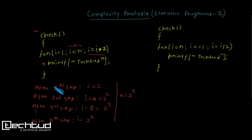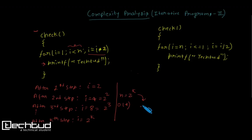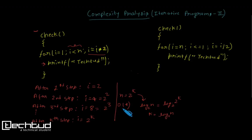At every step printf executes only once, so the complexity is O(k). We can express k in terms of n: since n = 2^k, taking log base 2 of both sides gives k = log₂(n). Therefore the complexity of this function is O(log n), where the base is 2.